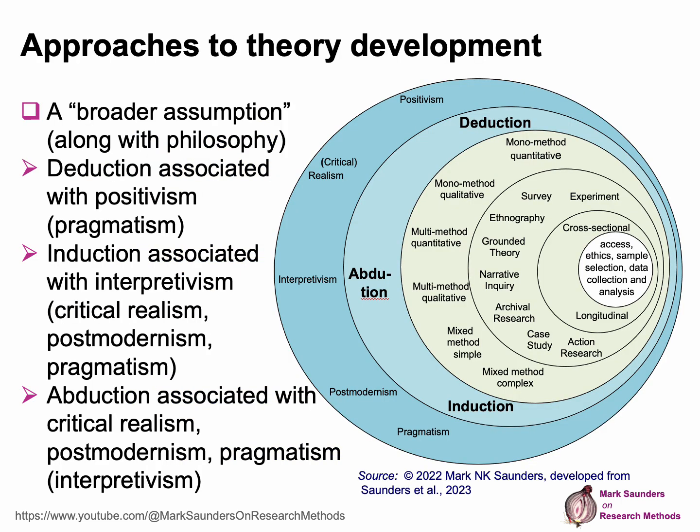So how does this play out with the research onion? Approaches to theory development are part of the broader assumptions on which we base our research design, and these, along with philosophy, are the things we need to get very clear in our heads before we move further. Deduction is very much associated with positivism in terms of research philosophies, although it can also be associated with pragmatism.